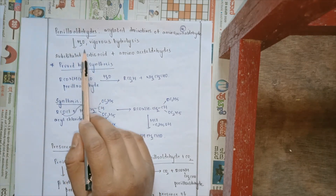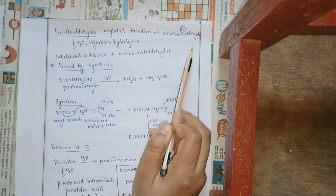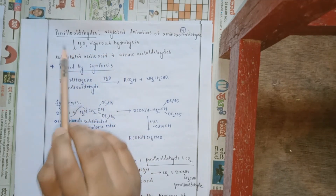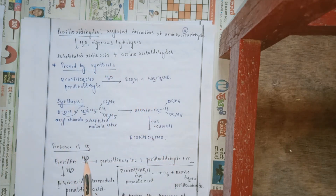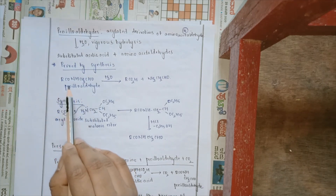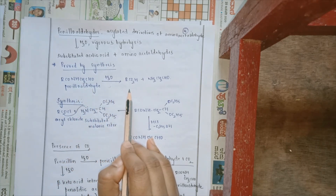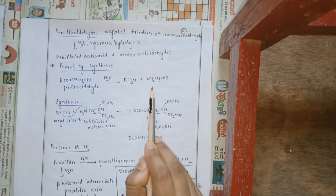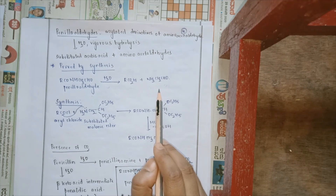The next product is peniloaldehyde, which is an acylated derivative of aminoacetaldehyde. Peniloaldehydes upon vigorous hydrolysis in the presence of water give a substituted acetic acid and aminoacetaldehyde. This can be proved by synthesis. When peniloaldehyde (R-CO-NH-CH2-CHO) undergoes vigorous hydrolysis, it gives a substituted acid and aminoacetaldehyde (NH2-CH2-CHO).